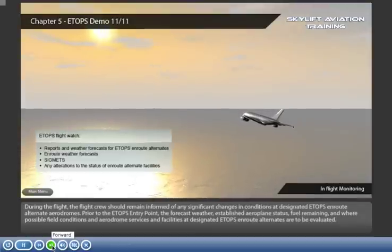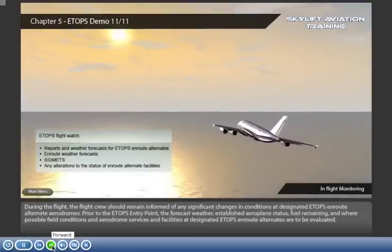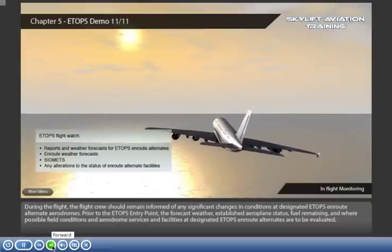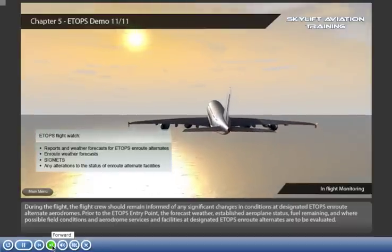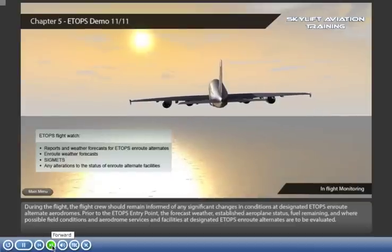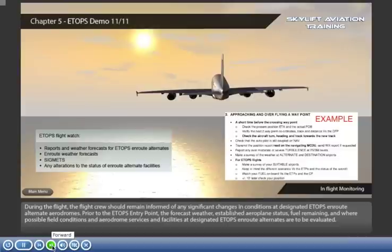During the flight, the flight crew should remain informed of any significant changes in conditions at designated ETOPS en route alternate aerodromes. Prior to the ETOPS entry point, the forecast weather, established aerodrome status, fuel remaining, and where possible, field conditions and aerodrome services and facilities at designated ETOPS en route alternates are to be evaluated.